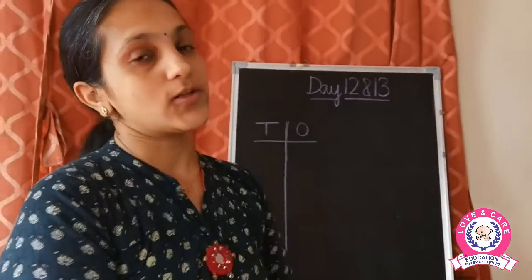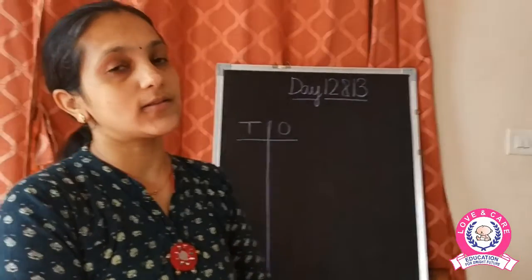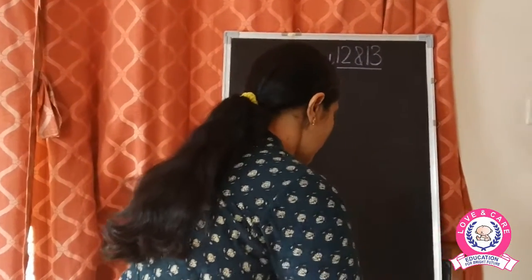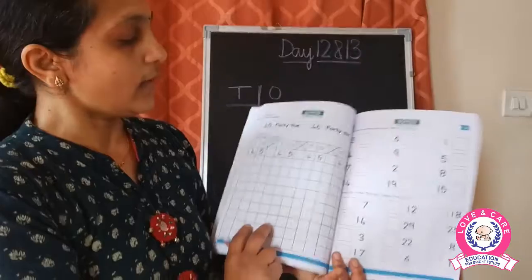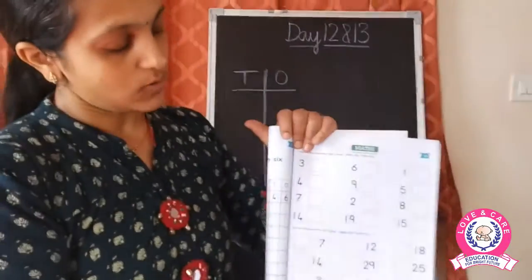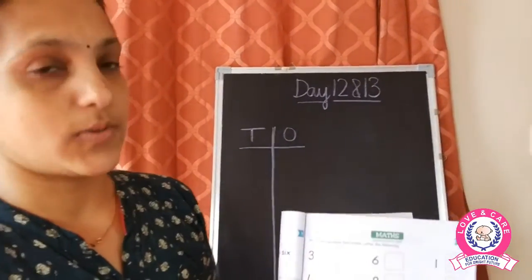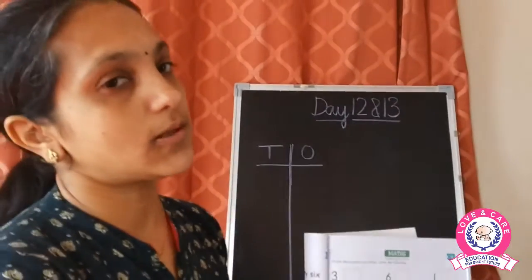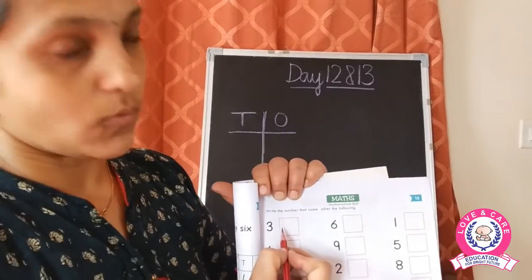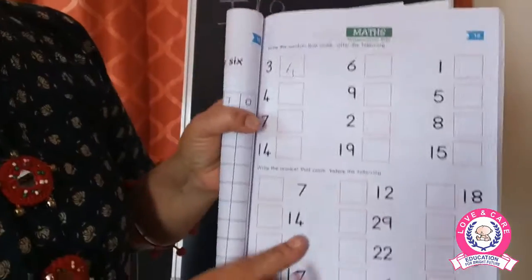Hello children, good morning! Today we are going to do Day 12 and 13. We are going to open the page and come here. On Day 12 you have the after and before number concept that we have already done, so you now know the concept of after number. After number is the number that comes after. So this is three — after three will come four.